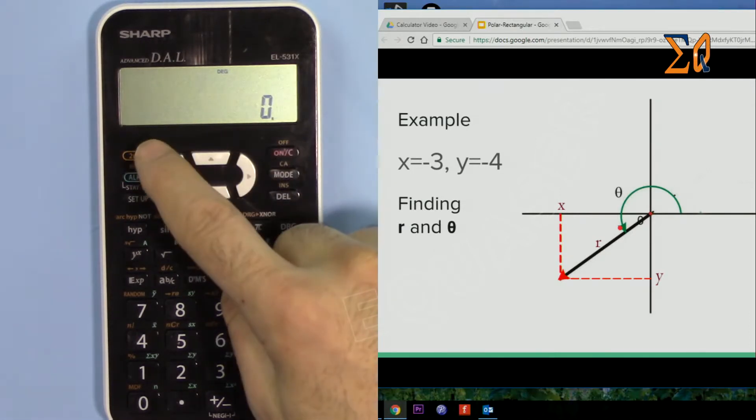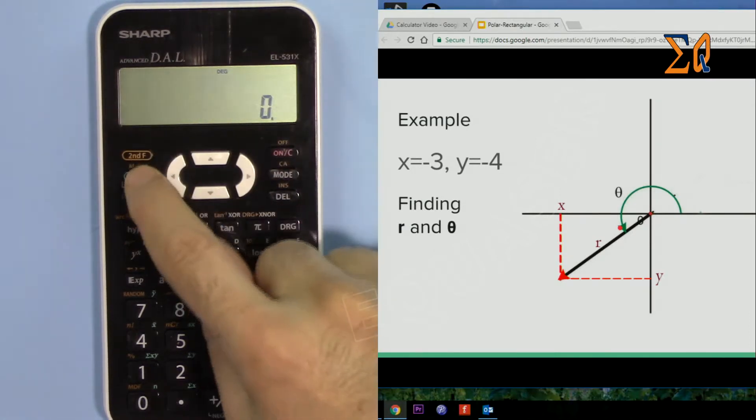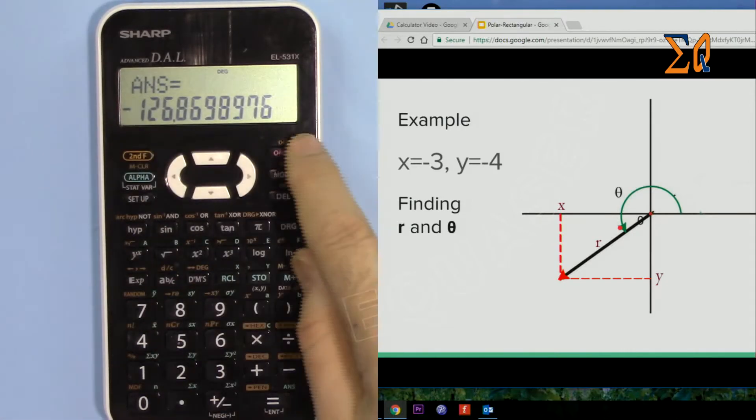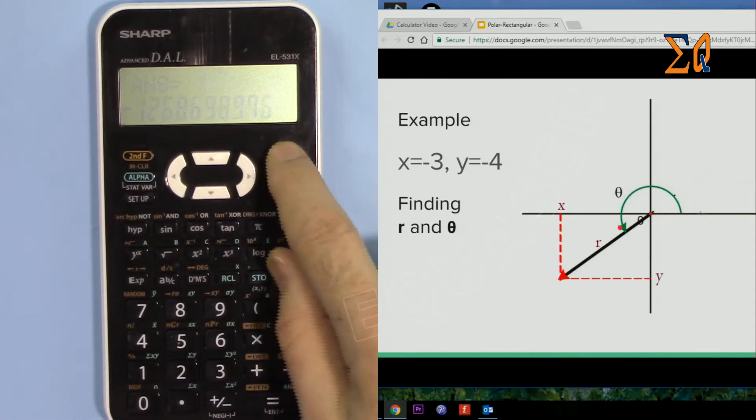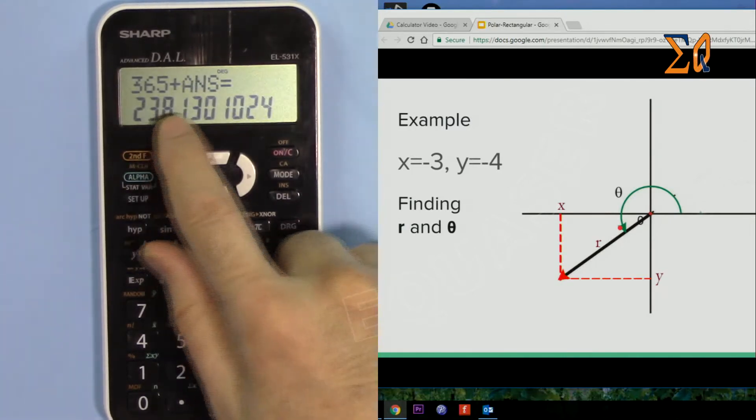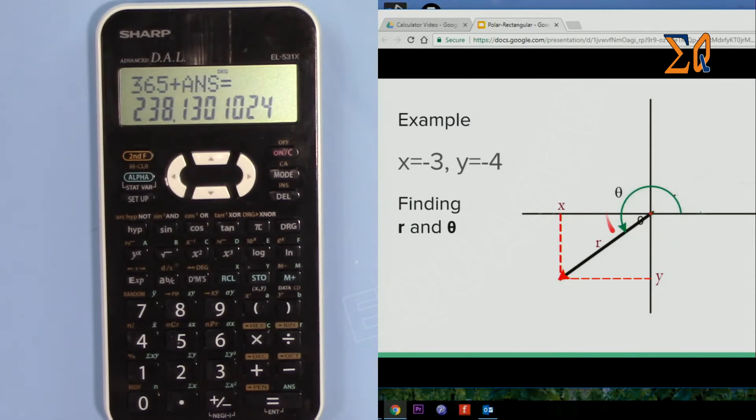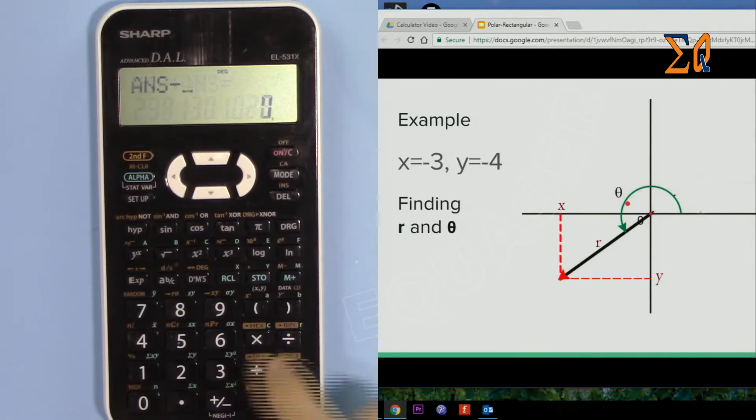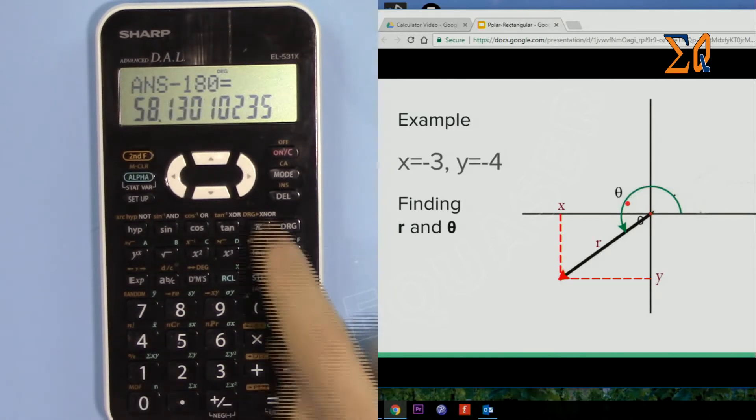Now let's get the last value. This answer is working - alpha answer. If I press equal sign, the value is already here. So if you have an answer, just 365 plus alpha answer, equal sign - that is 238 from the other side. But if you want to just get from here to here, subtract 180. So minus 180 will give you 58.13.